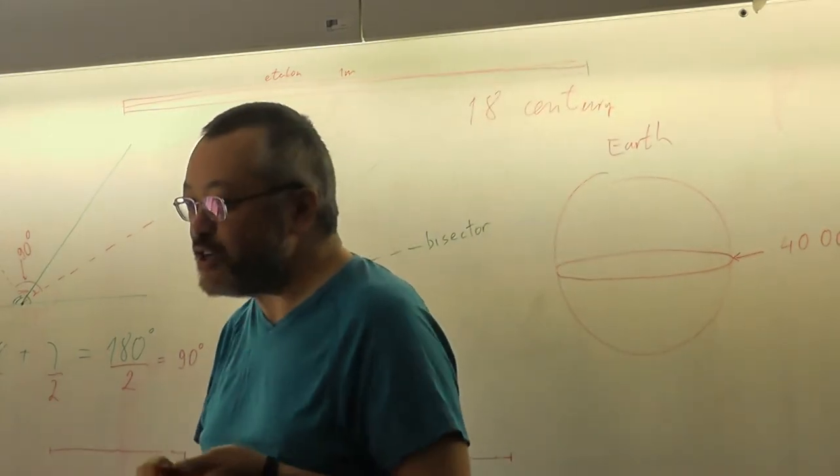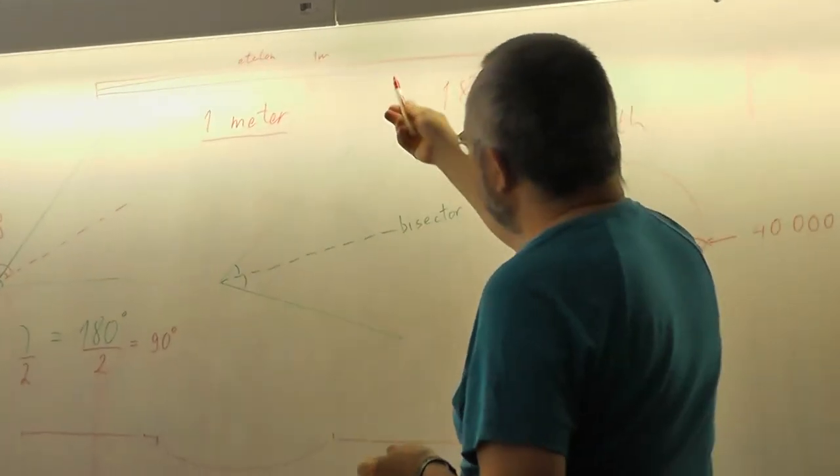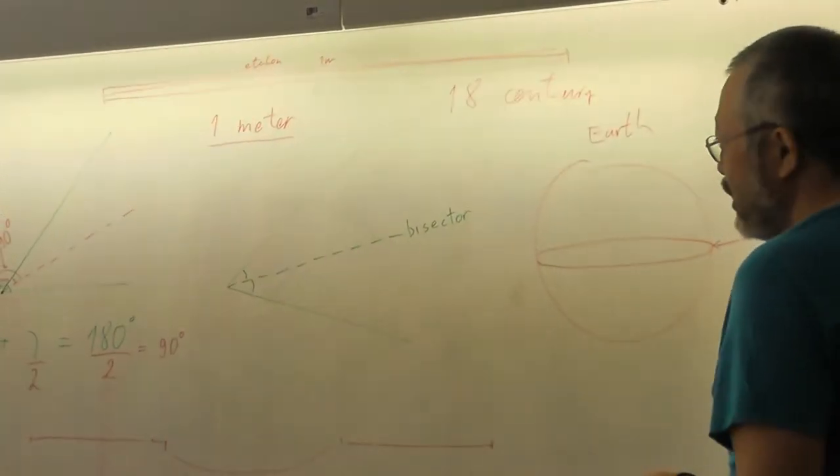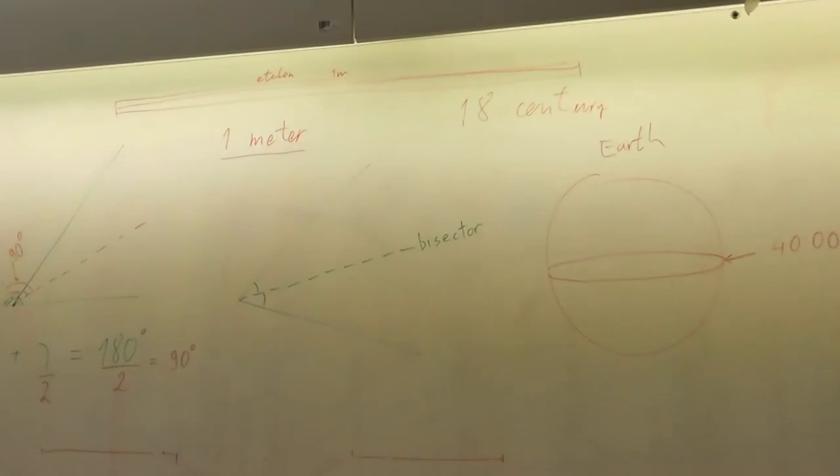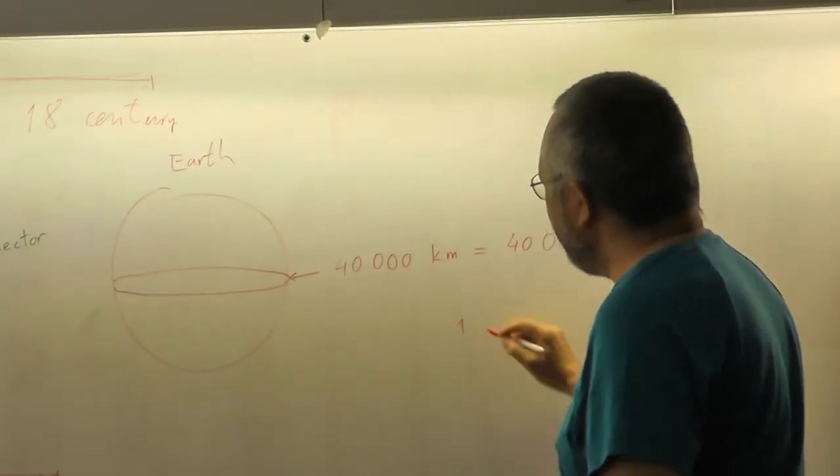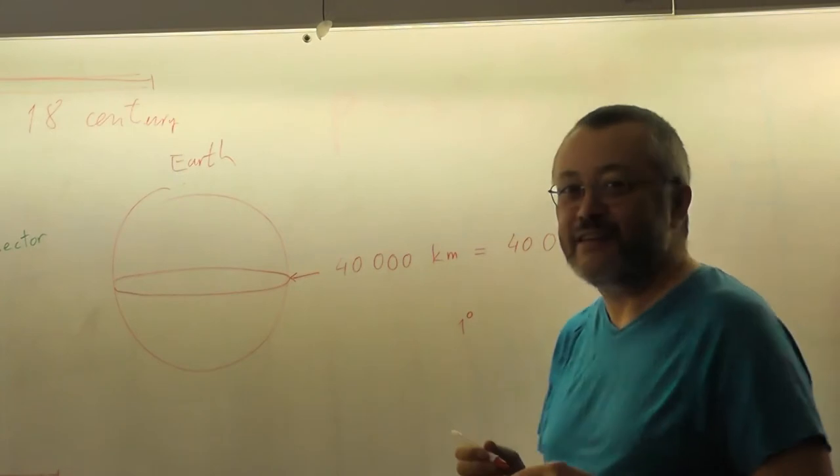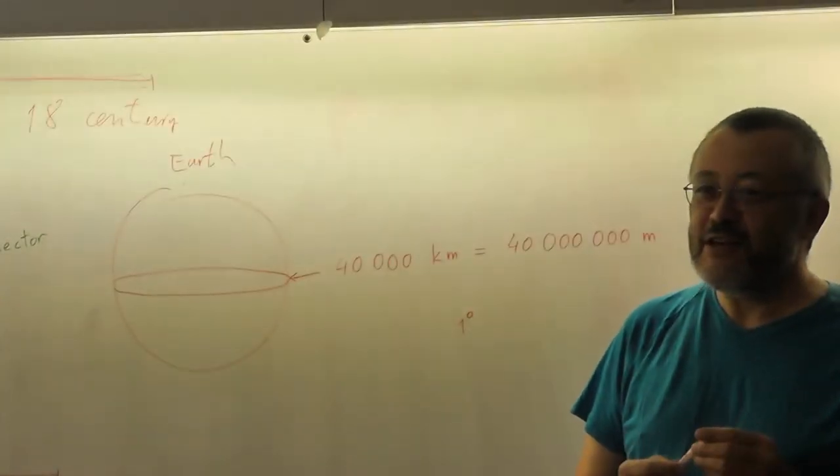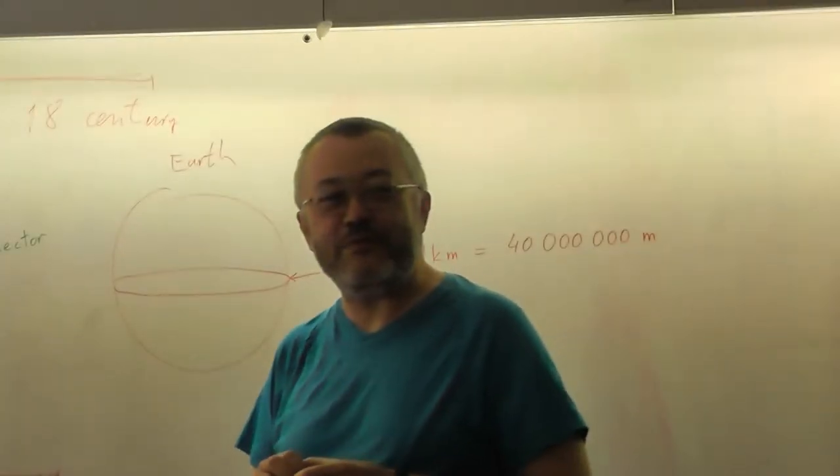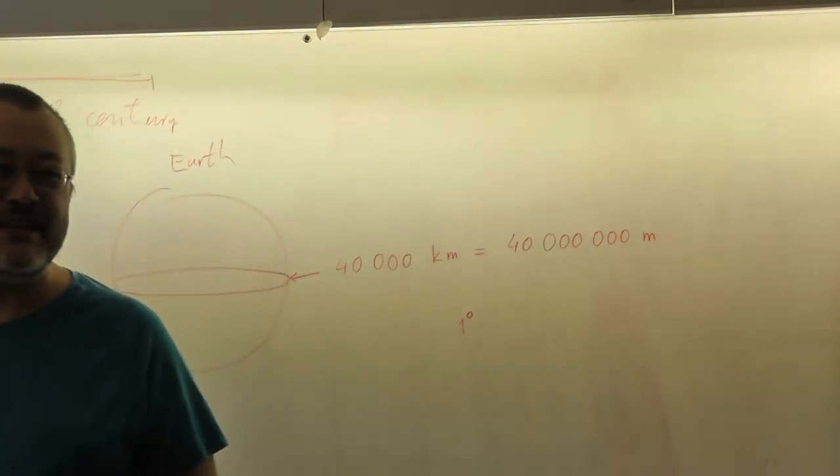So indeed, they need some definition. But now the question is that they have an etalon of one meter, but also why they don't need, they didn't make an etalon of one degree. So why did they make an etalon of one meter but not an etalon of one degree?